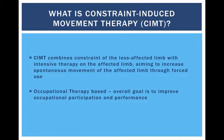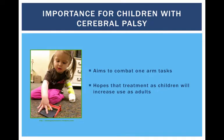Constraint-induced movement therapy is occupationally based, as the end goal is to improve limb movement and control to allow for greater participation and performance in everyday occupations. Many children with cerebral palsy will learn and adapt tasks so they only have to use one hand. This means as they grow up, their affected arm will be used less and less, and the ability to learn new tasks with both hands will decrease. Constraint-induced movement therapy aims to combat this one-arm use and encourage bimanual use of the upper limbs and increase spontaneous use of the affected limb as they get older.